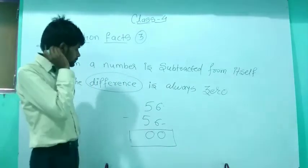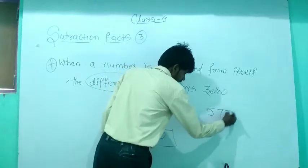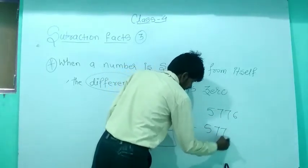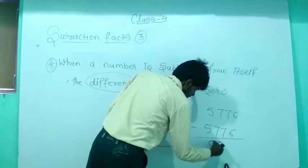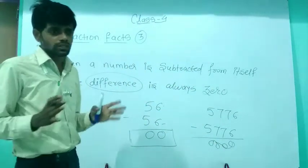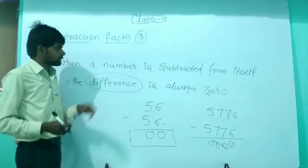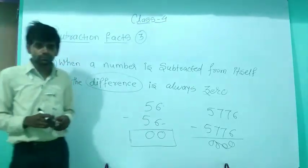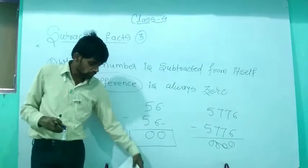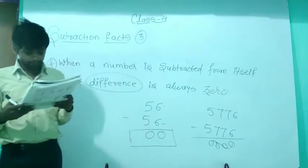For example, 5776 minus 5776 — all digits give 0, 0, 0, 0. So the answer is 0. This is all about subtraction facts. I hope you can solve the mental math on page number 32.